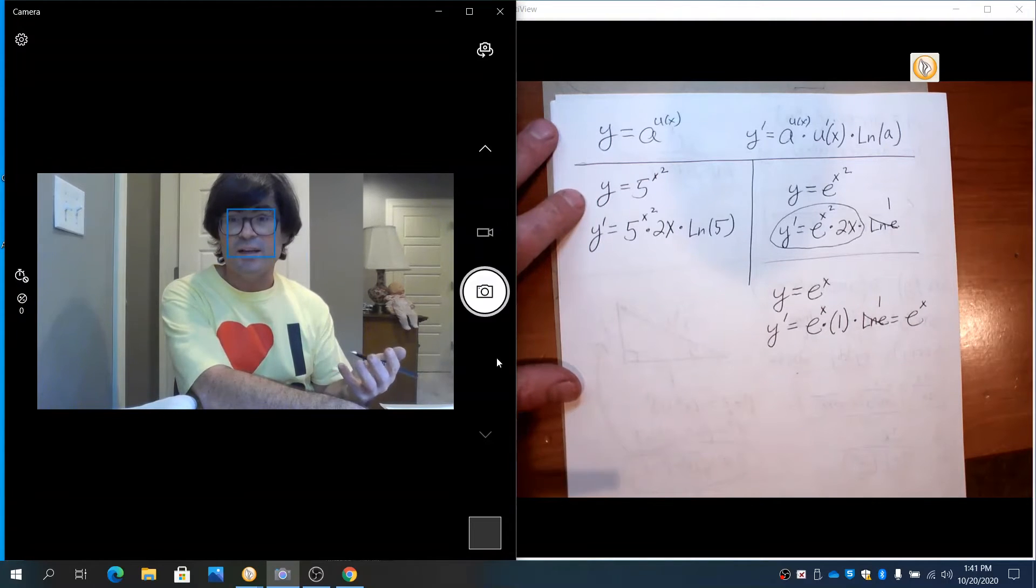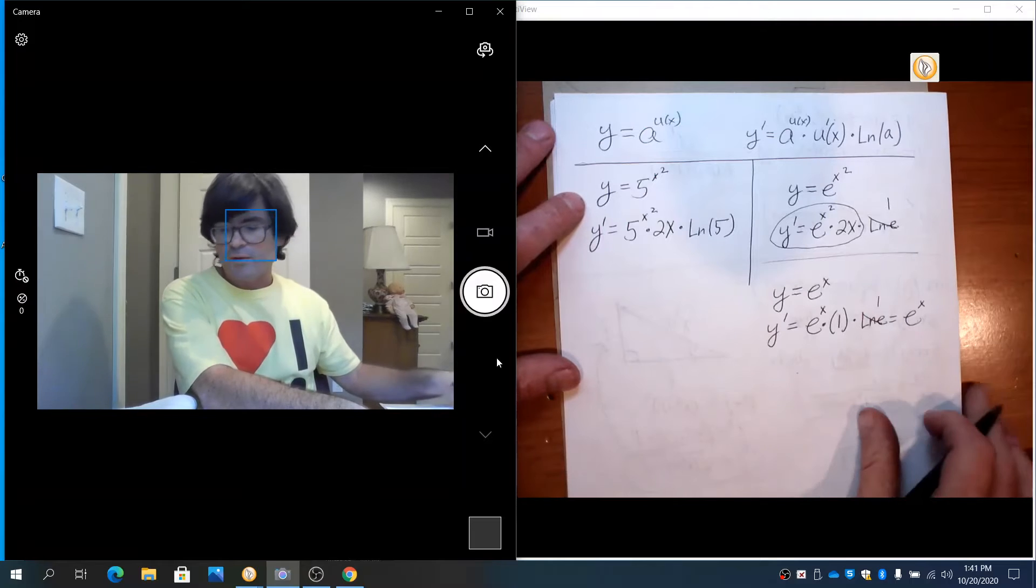So the derivative of e to the x is simply e to the x. That's pretty interesting. So if you see a derivative e to the x, you know the derivative is just itself.